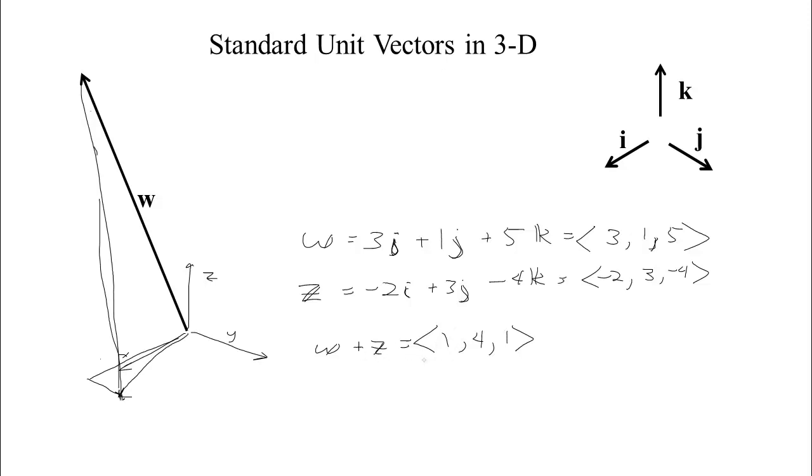Scaling works the same, subtraction works the same. So to scale, you just multiply each entry by the same scalar. So if w is this vector 3, 1, 5, then we'll get 9, 3, 15. We just scale each entry. And subtracting, we just subtract components.